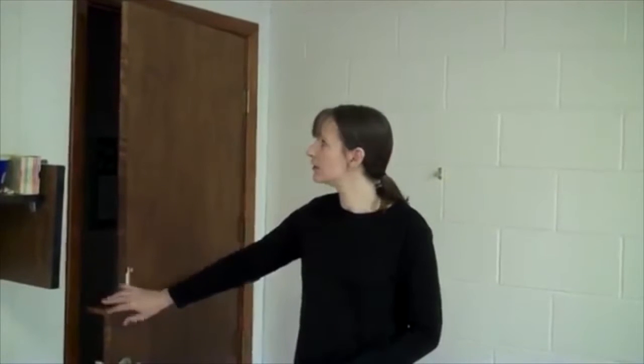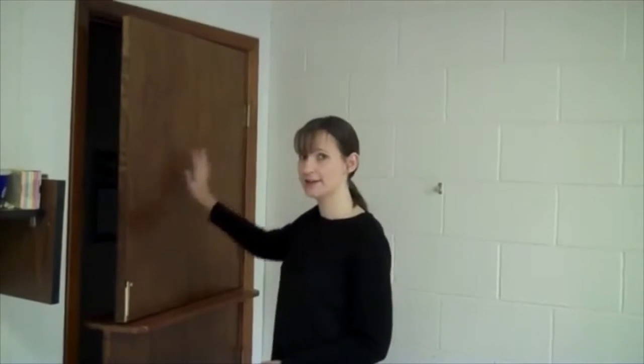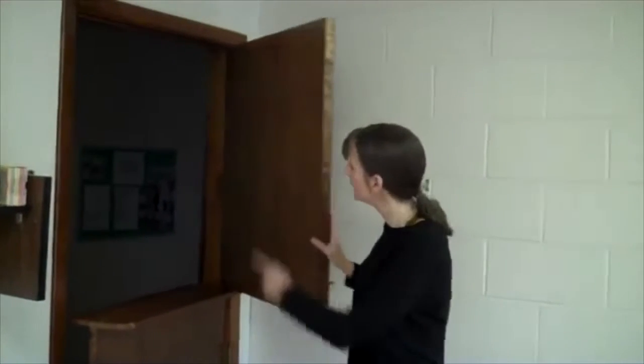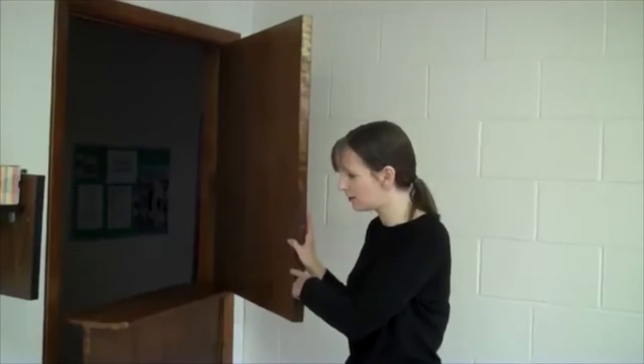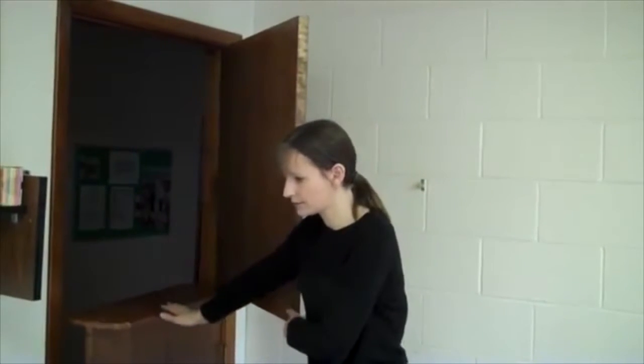The hinge theorem tells us that if two sides of one triangle are congruent to two sides of another triangle, so here I have the doorway and the door are both congruent on both the top and the bottom pieces of this door. And if the included angle of the first triangle, here the top door, is larger than the included angle of the second, here the bottom door,